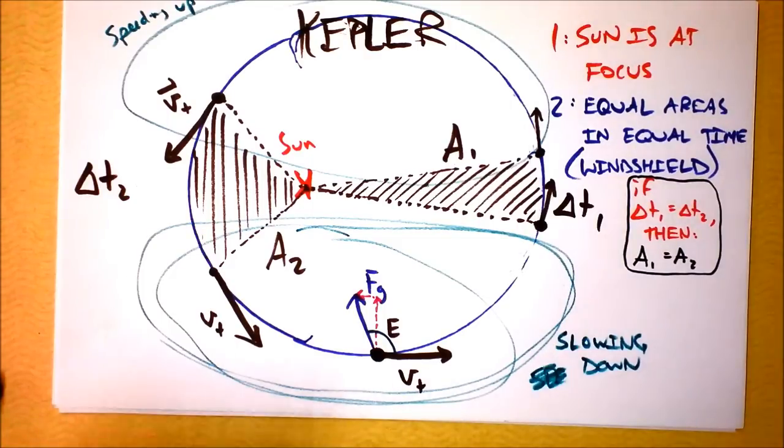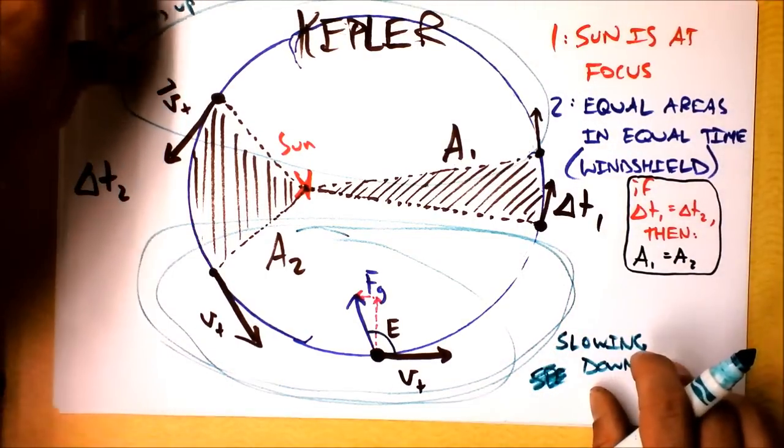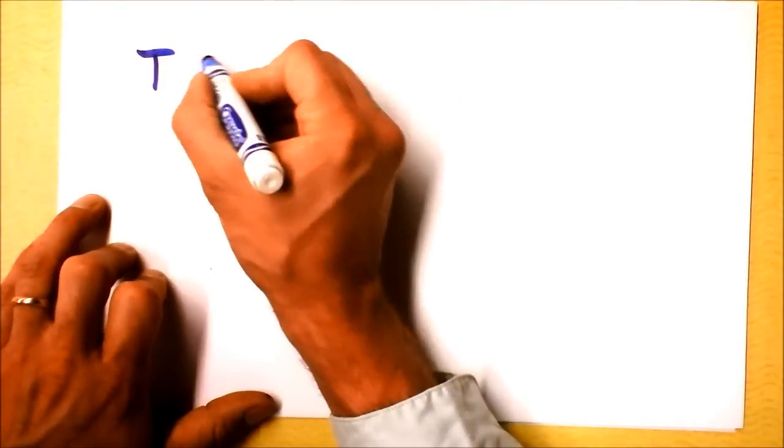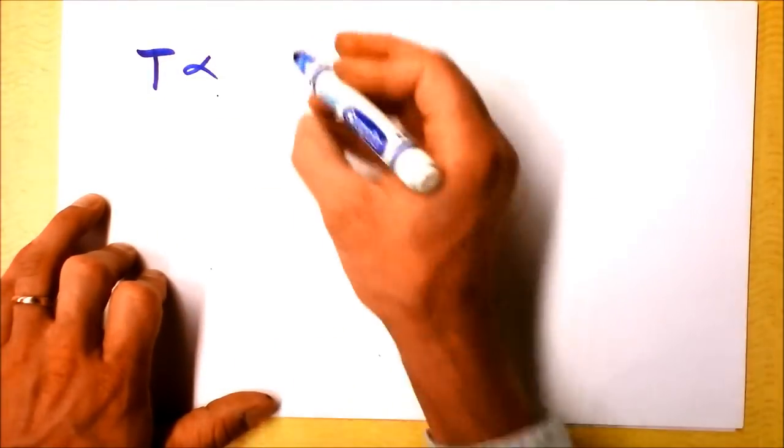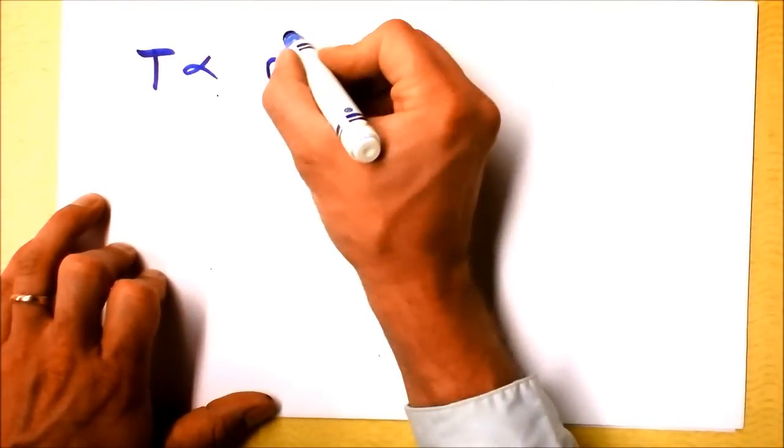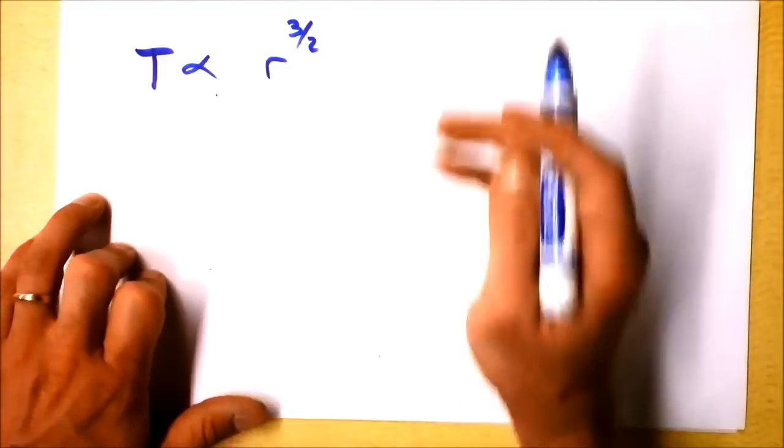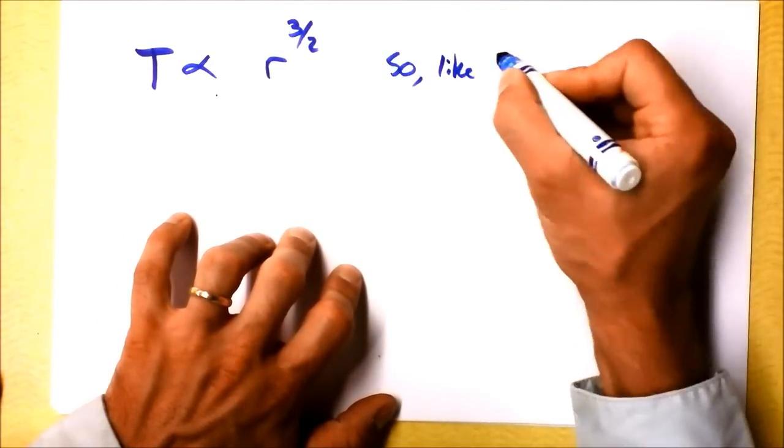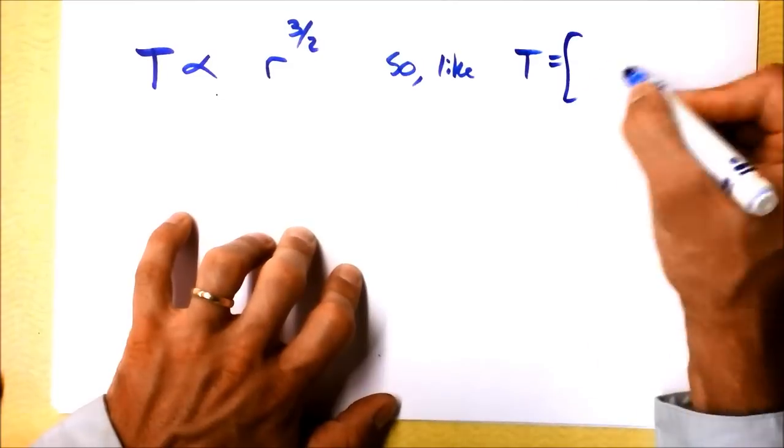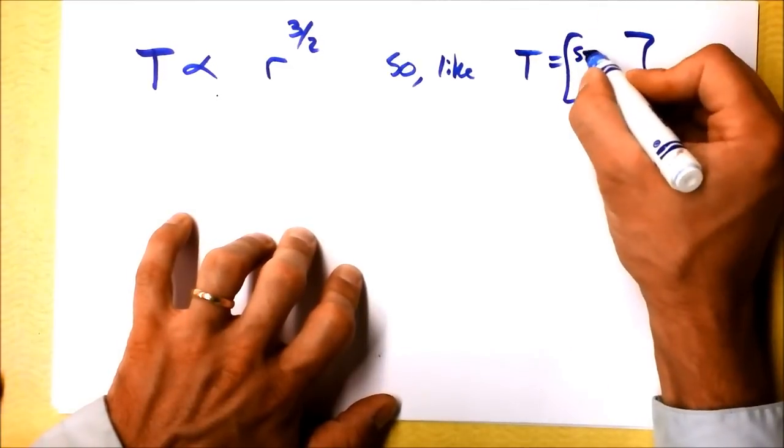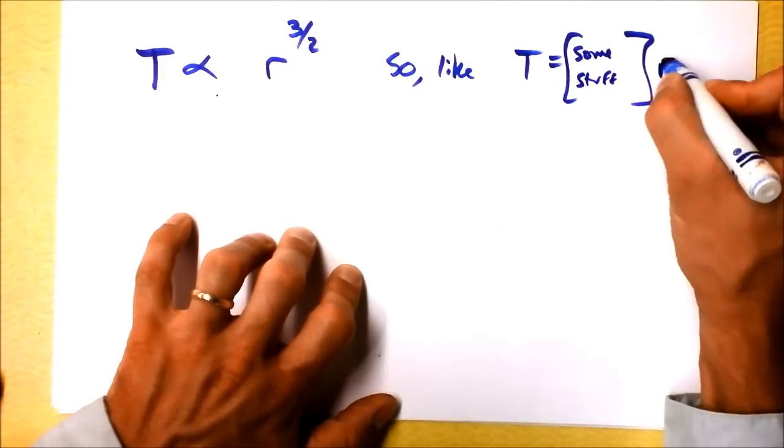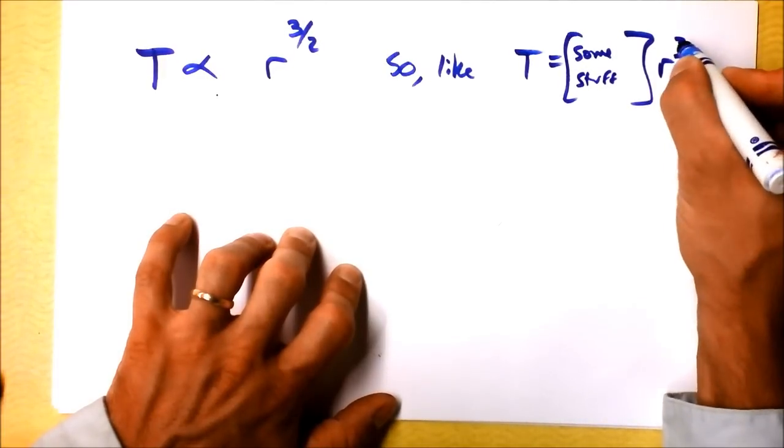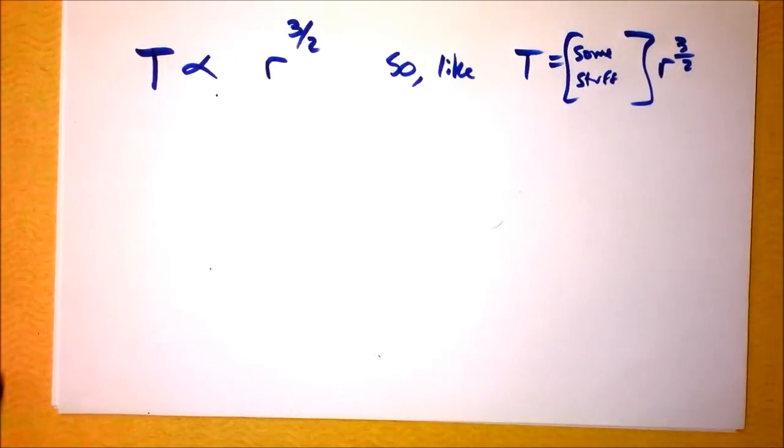And then Kepler's third law is a beautiful thing. So let's see if we'll just plop down Kepler's third law, which he got simply from mathematically analyzing these enormous bits of data. He said T is proportional to r to the three-halves. And that means the same thing. T equals some stuff times r to the three-halves. So let's see if we can derive that, though. It's actually not that bad.